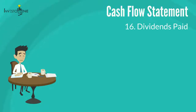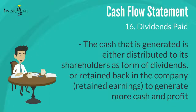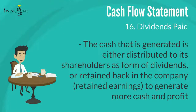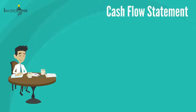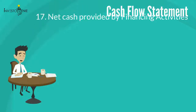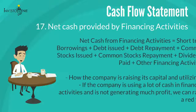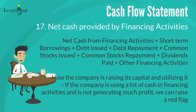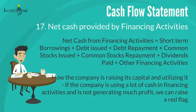Sixteen: dividends paid. The cash that is generated is either distributed to shareholders as dividends or retained back in the company as retained earnings to generate more cash and profit. The cash used to pay dividends is indicated by dividends paid in the financing activities section. Seventeen: net cash provided by financing activities is the sum of short-term borrowings, debt issued, debt repayment, common stock issued, common stock repurchased, dividends paid, and other financing activities.